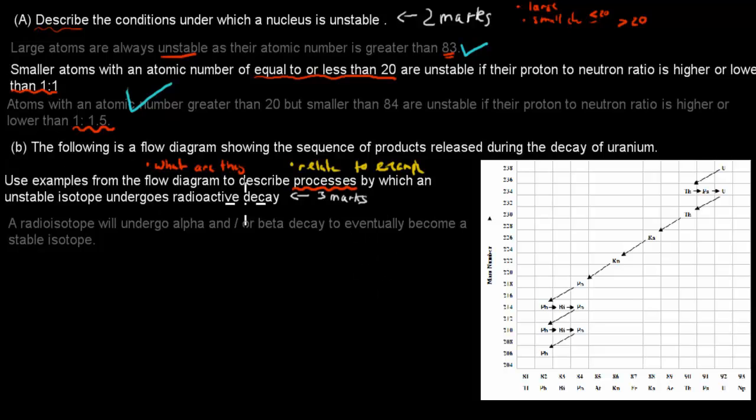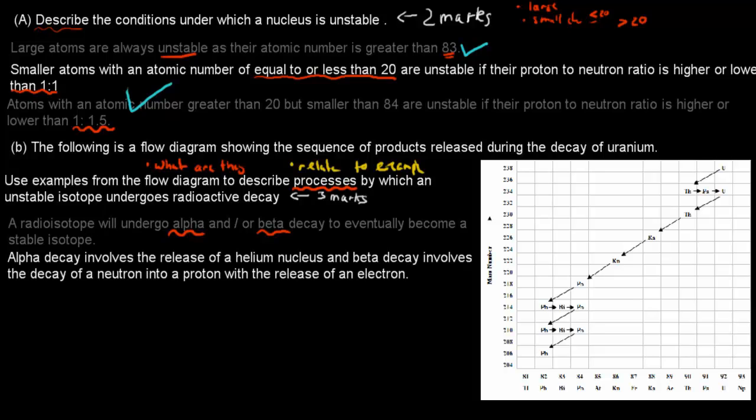So this is what are these processes? These processes are alpha and beta decay, which will eventually become a stable isotope. So it goes from uranium to lead for these two processes. Now I also gave a quick definition of what alpha and beta decay is.